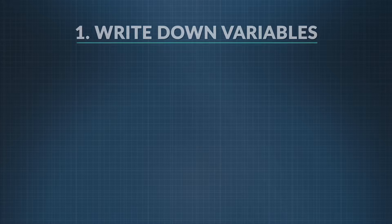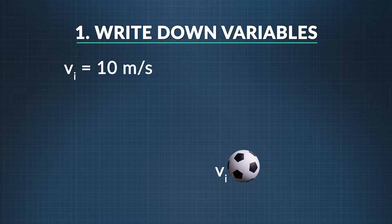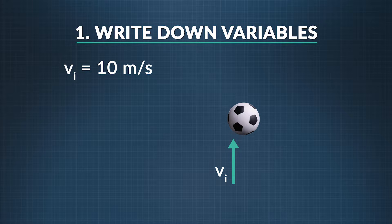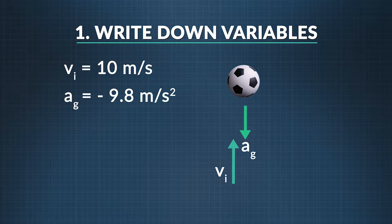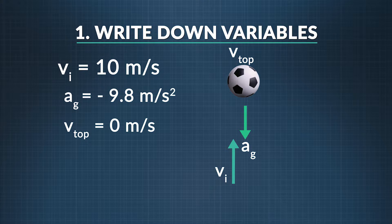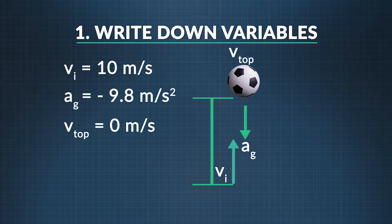Step one is to write down your variables. The origin is the place the ball left our hand, and the positive direction is up. Let's say I throw the ball at 10 meters per second up in the positive direction. The ball's initial velocity is positive 10 meters per second. When the ball leaves my hand, it immediately starts to decelerate because it is only under the influence of gravity. The ball's acceleration, a sub g, is negative 9.8 meters per second squared. It decelerates until it reaches a velocity of zero at its maximum height, and that's v sub top. We now have values for our initial velocity, final velocity, and acceleration. Our unknown is our maximum height, which we represent as d, displacement.